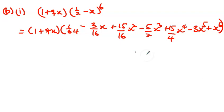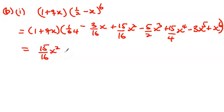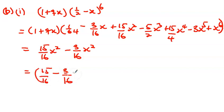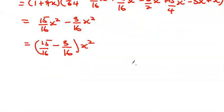We don't need to expand all the terms — we just identify terms that can give us x squared. Taking the first term 1: 1 times 15/16 x squared gives 15/16 x squared. Then taking qx: qx times (-3/16 x) gives minus 3q/16 x squared. So the coefficient of x squared is 15/16 minus 3q/16. According to the question, this coefficient is equal to zero.